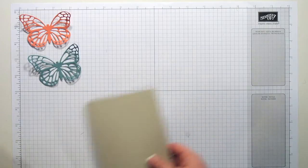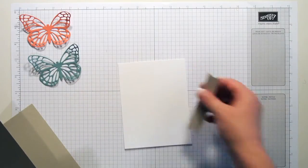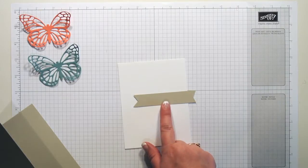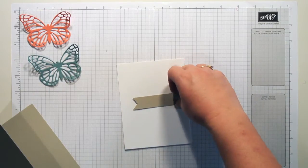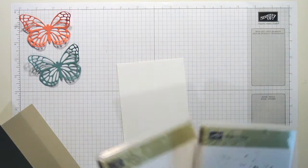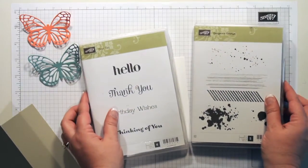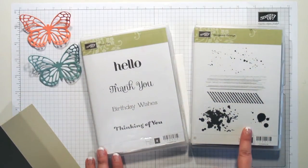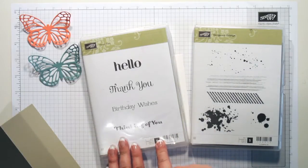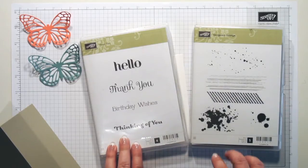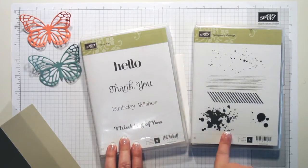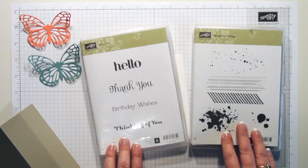Now for my stamping, I'm using a piece of Whisper White cardstock, and I'm also using a little banner piece that I made again with the Sahara Sand. The stamp sets I'm going to use are Gorgeous Grunge and For You. Now these are in the annual catalog from Stampin' Up.